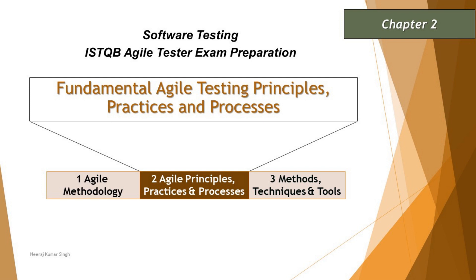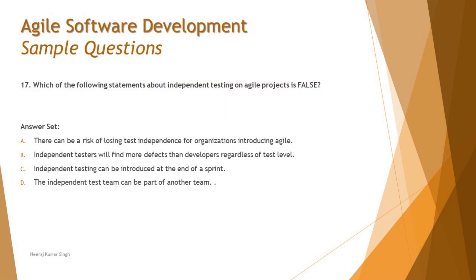Question number 17 is: which of the following statements about independent testing on an agile project is false? Sometimes they ask straightforward true/false questions, and we have to be careful about what they're asking. This question asks for the only option which is not correct about independent testing.